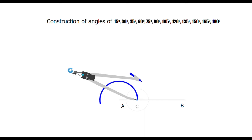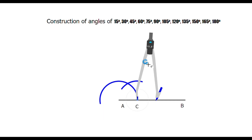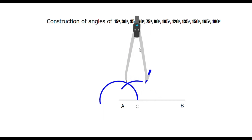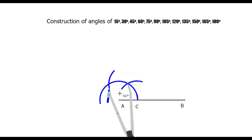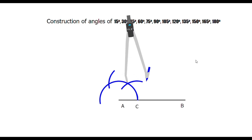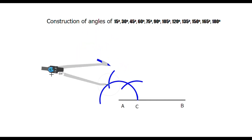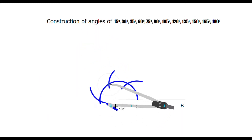Now place the compass on C and without changing the compass width draw another arc that intersects the first arc. Without changing the compass width, place the compass on the intersecting point of the arc and draw another arc that intersects the first arc at another point. Now place the compass on the second point of intersection and draw another arc with the same radius.